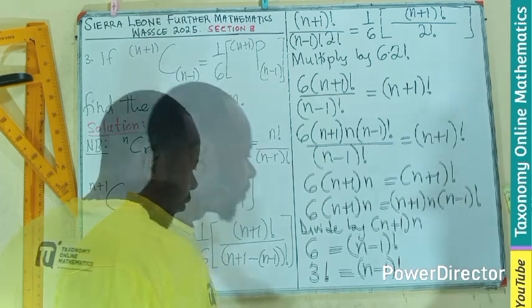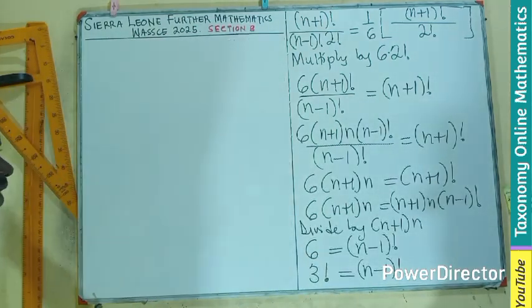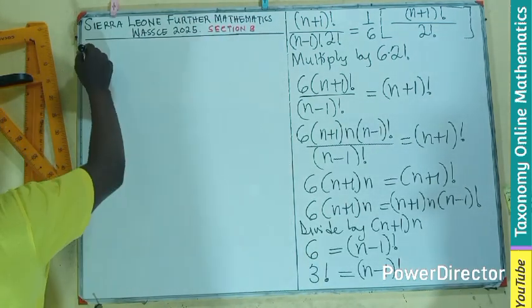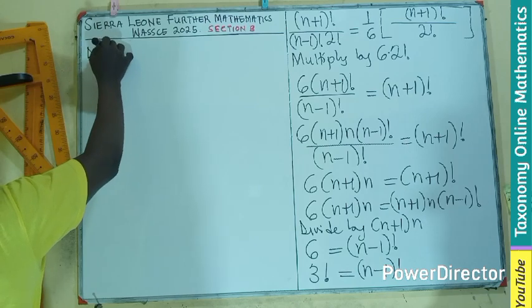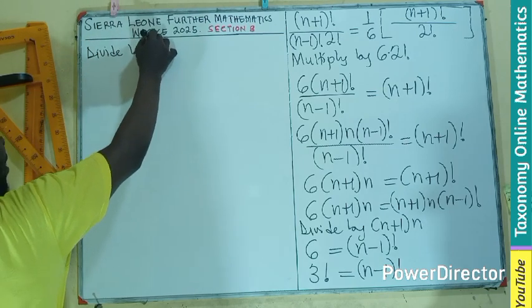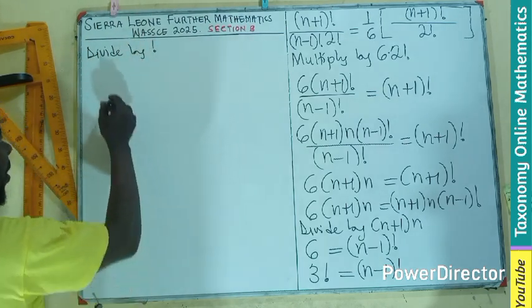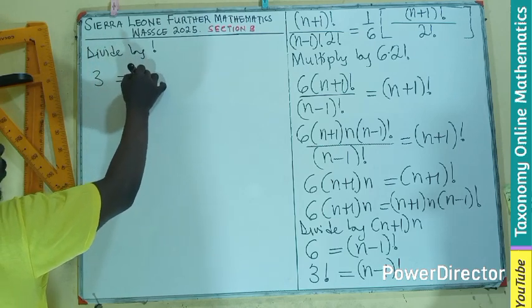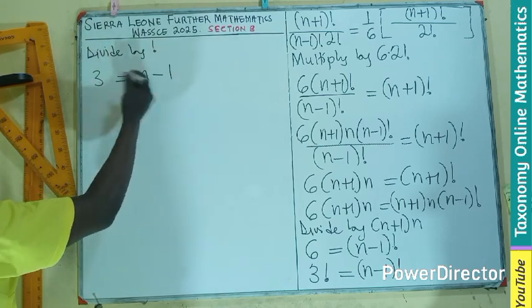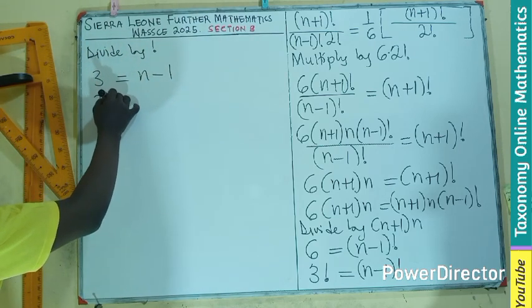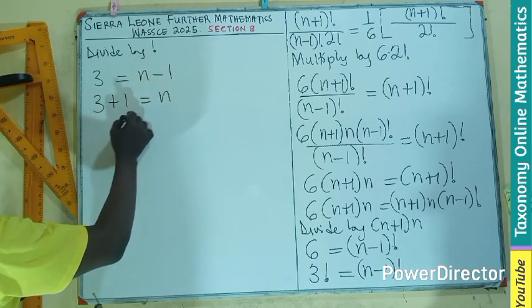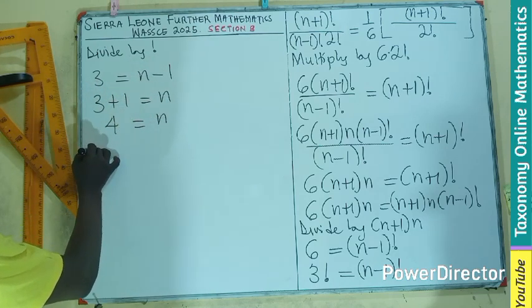So right from here, if we divide by the factorial, then I will be left with 3 equals to n-1. If you group like terms, it will become 3 plus 1 equals to n. 4 equals to n. So therefore, the value of n is going to be 4.